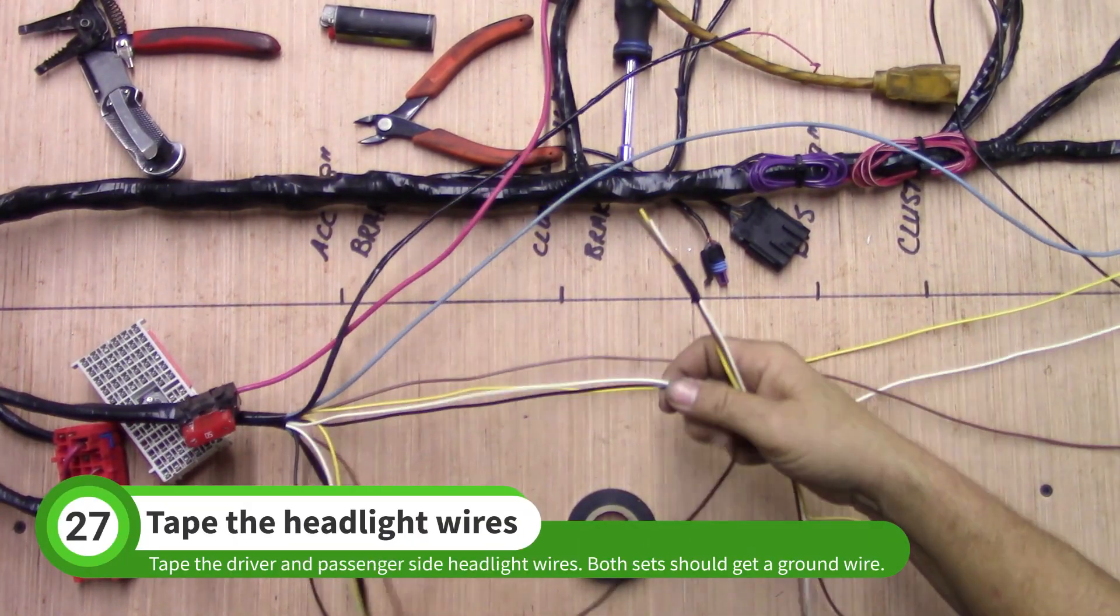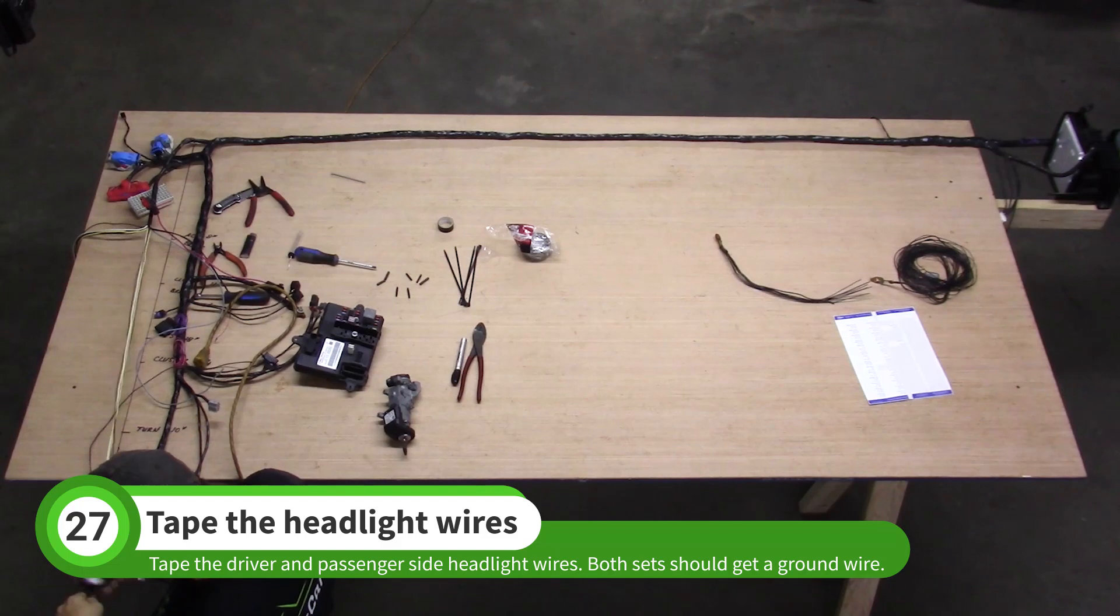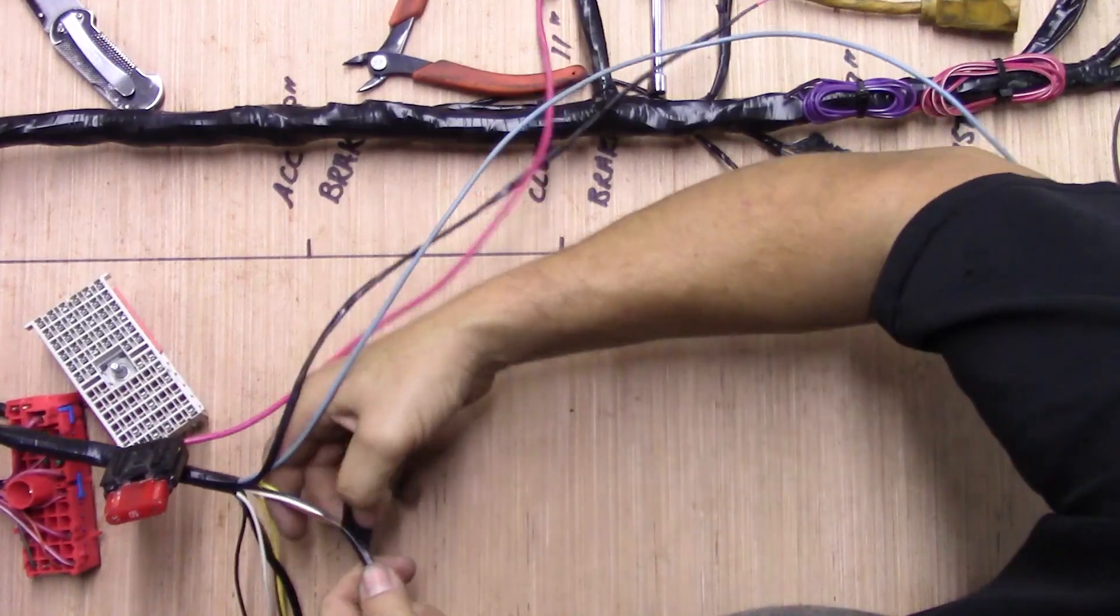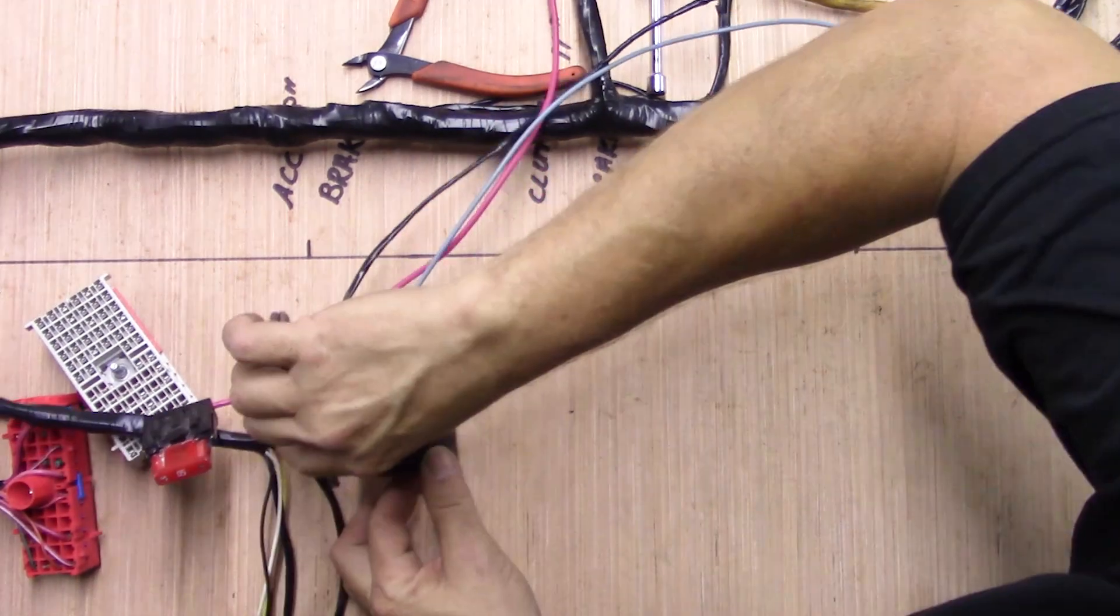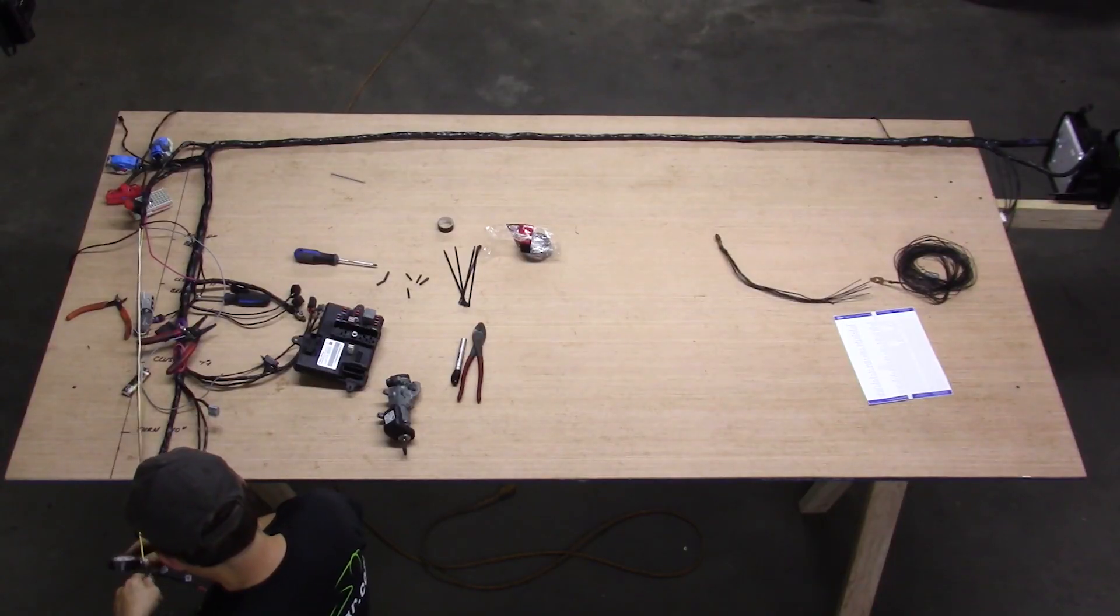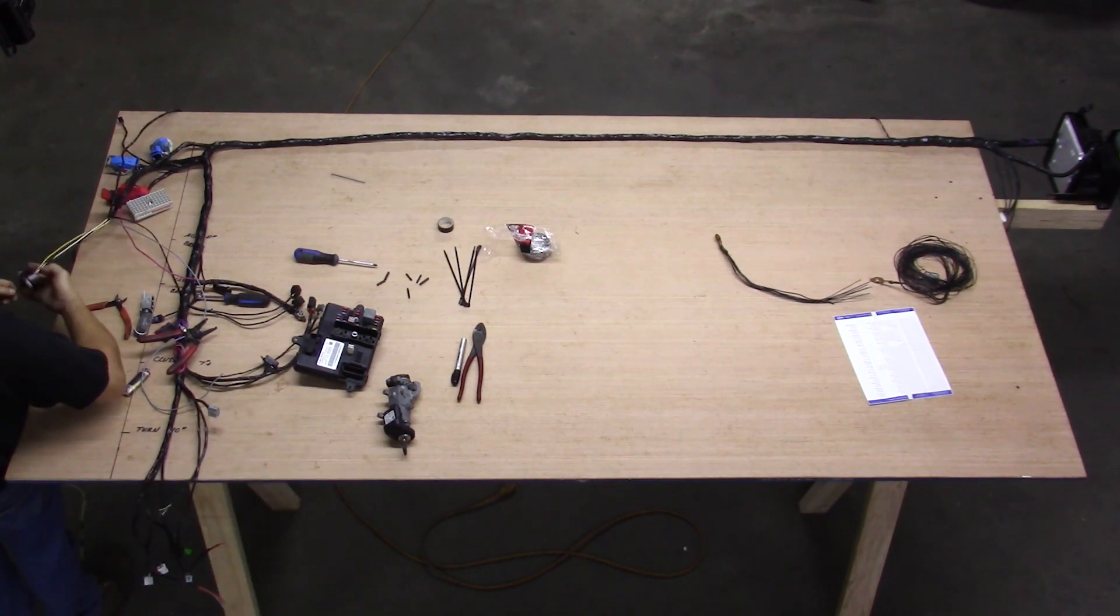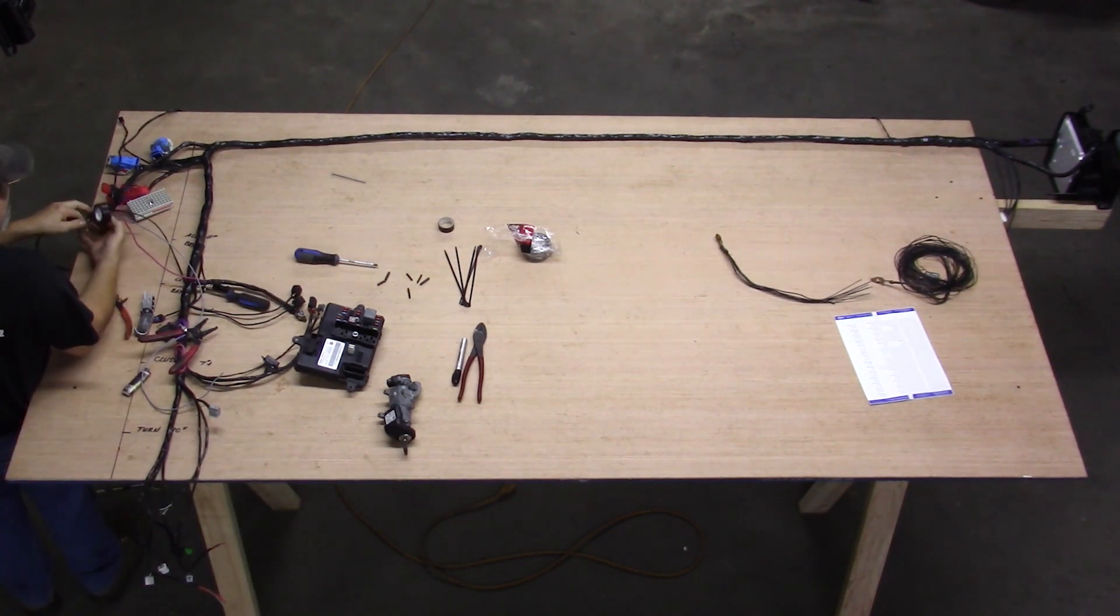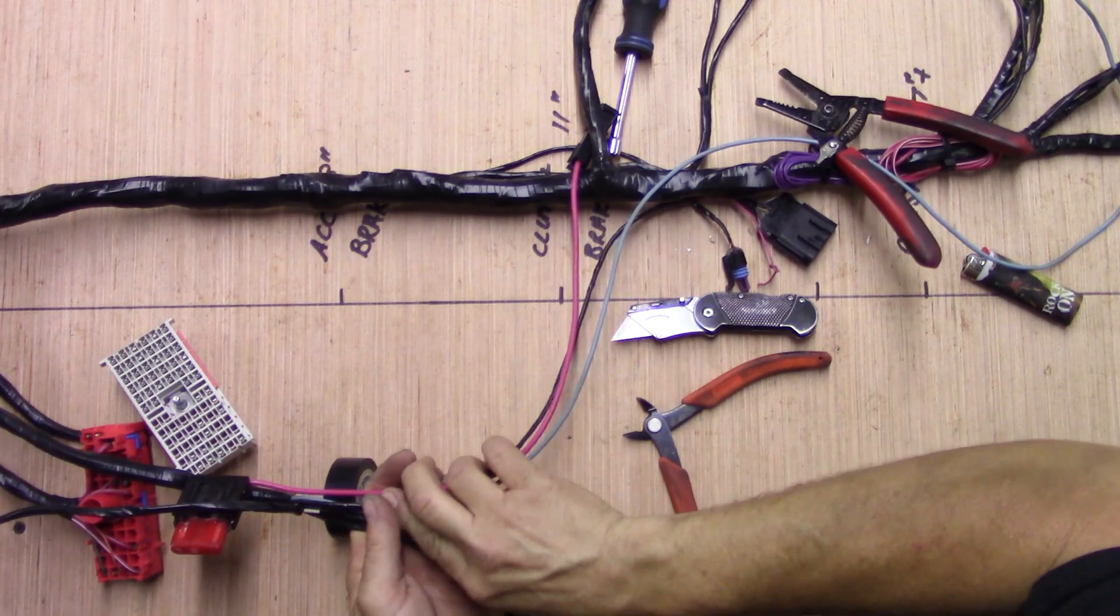Grab the first group of headlight wires and one of the ground wires. Tape up these wires. Repeat the process for the other set of headlight wires. Continue taping up to the 50 amp fuse.